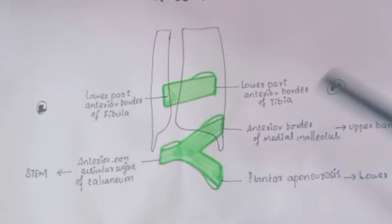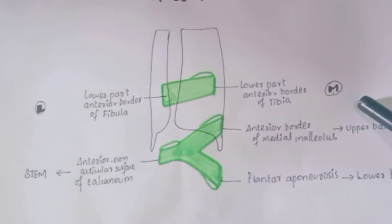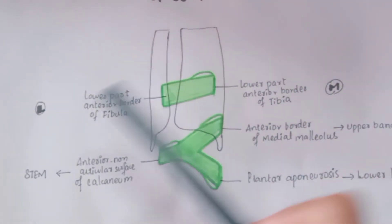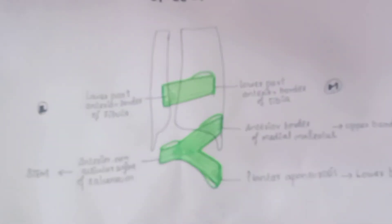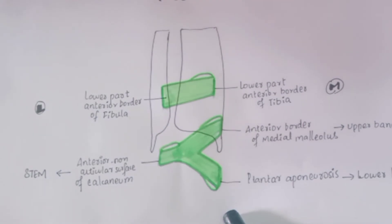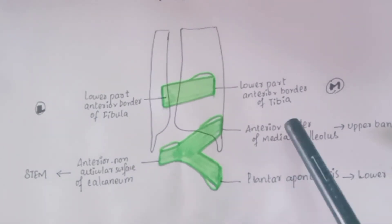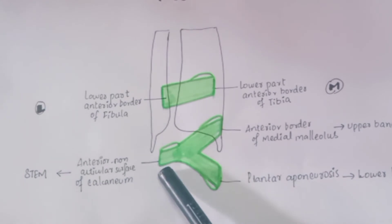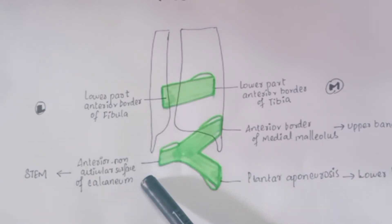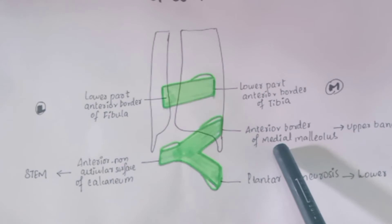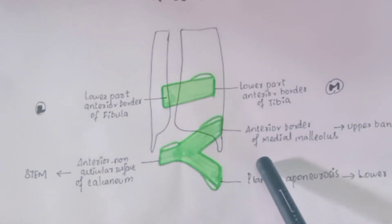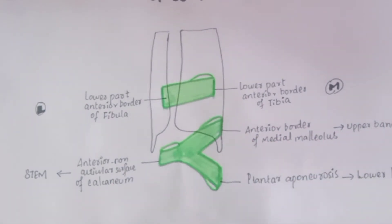The inferior extensor retinaculum has two bands and one stem. The stem is attached laterally to the anterior non-articular surface of the calcaneum, which is a tarsal bone. The upper band is attached to the anterior border of the medial malleolus, and the lower band is attached to the plantar aponeurosis.